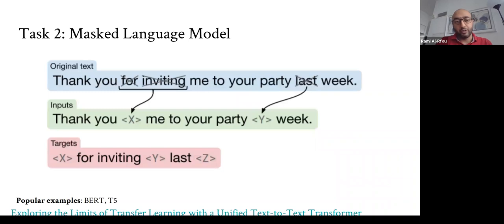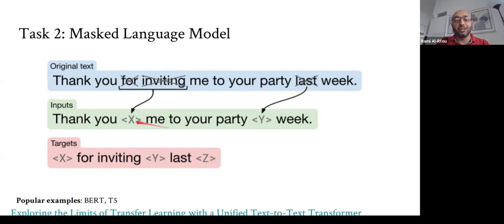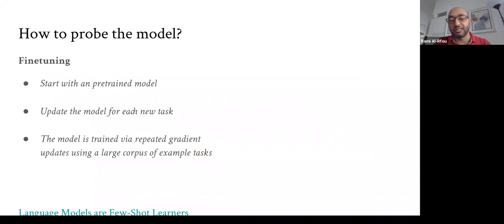Another popular approach is masked language modeling, popularized by BERT. The original text has different spans hidden; the encoder receives the masked text and the decoder generates the missing spans. Unlike causal language modeling where hidden spans are always in the future, here spans can appear anywhere in the sequence. This forces the encoder to use both past and future tokens to reconstruct each masked span, learning bidirectional information rather than unidirectional.